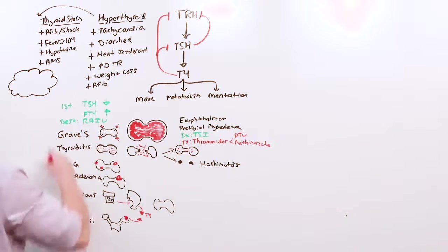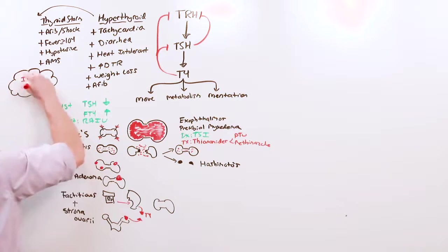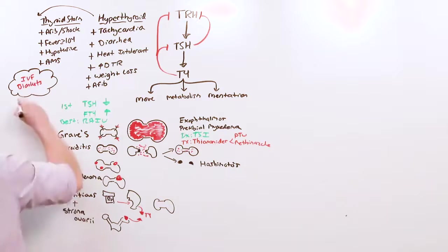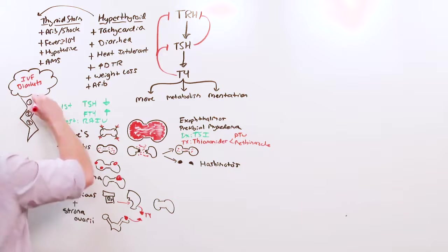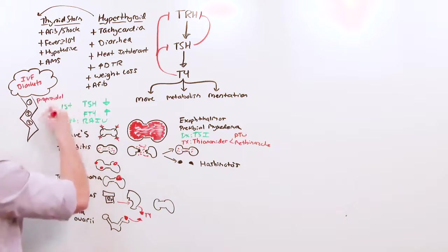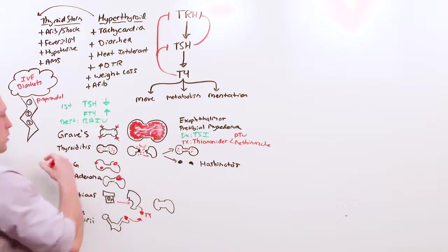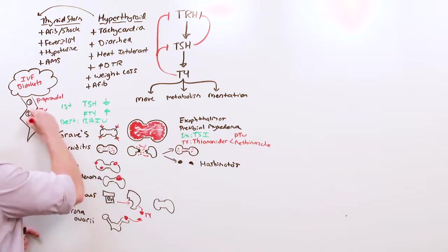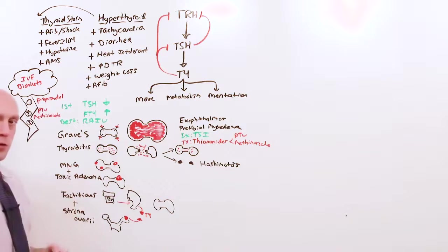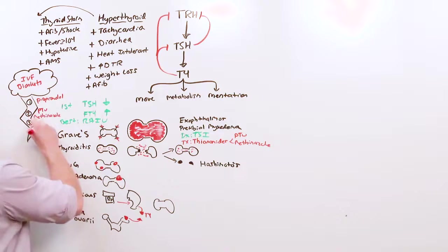Thyroid storm is treated with a storm cloud. First, cool them down. Give them cool IV fluids and cooling blankets. Get their temperature under control. That might help their hypotension. It's a storm cloud with a little lightning bolt. You do these in order. First, a beta blocker like propranolol to reduce autonomic symptoms. Then use thionamides, either PTU or methimazole. It doesn't matter which. And three, reduce peripheral conversion of T4 to the more active T3 by giving steroids.